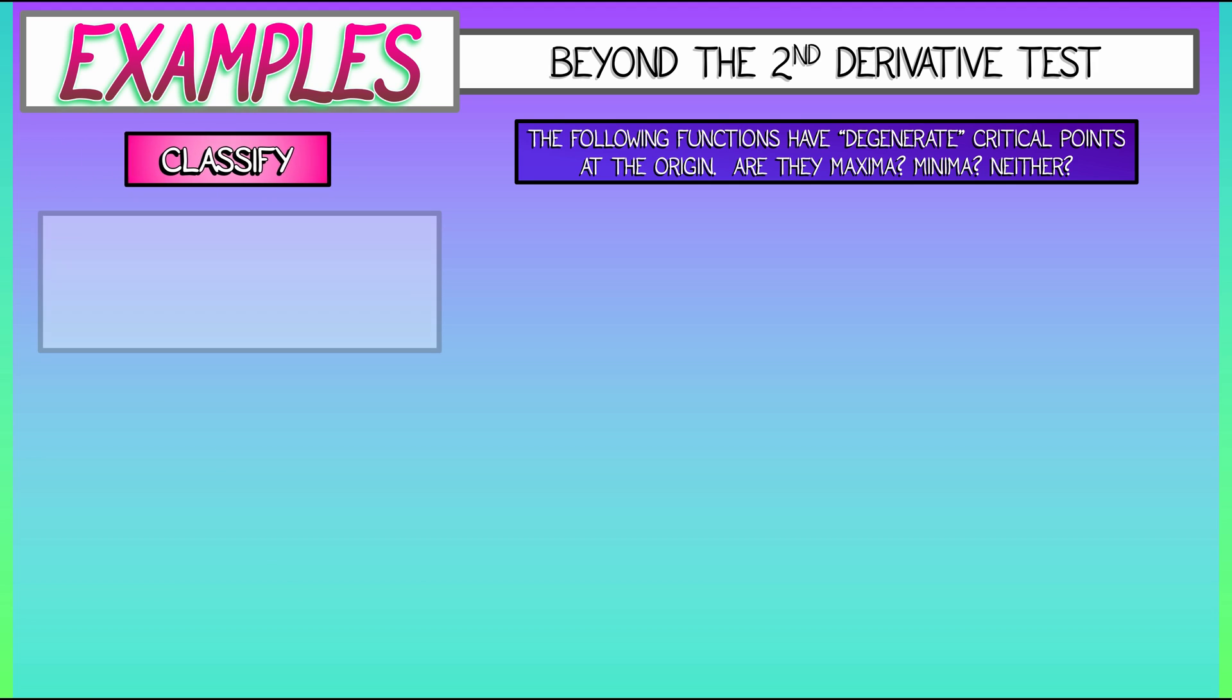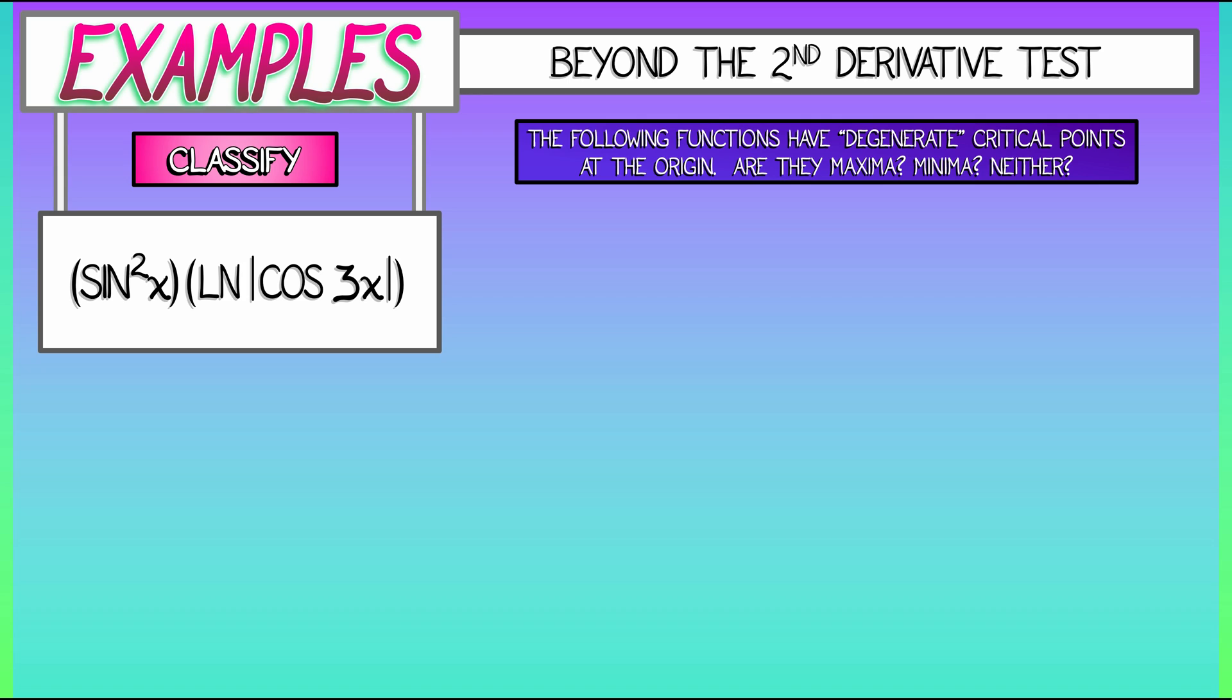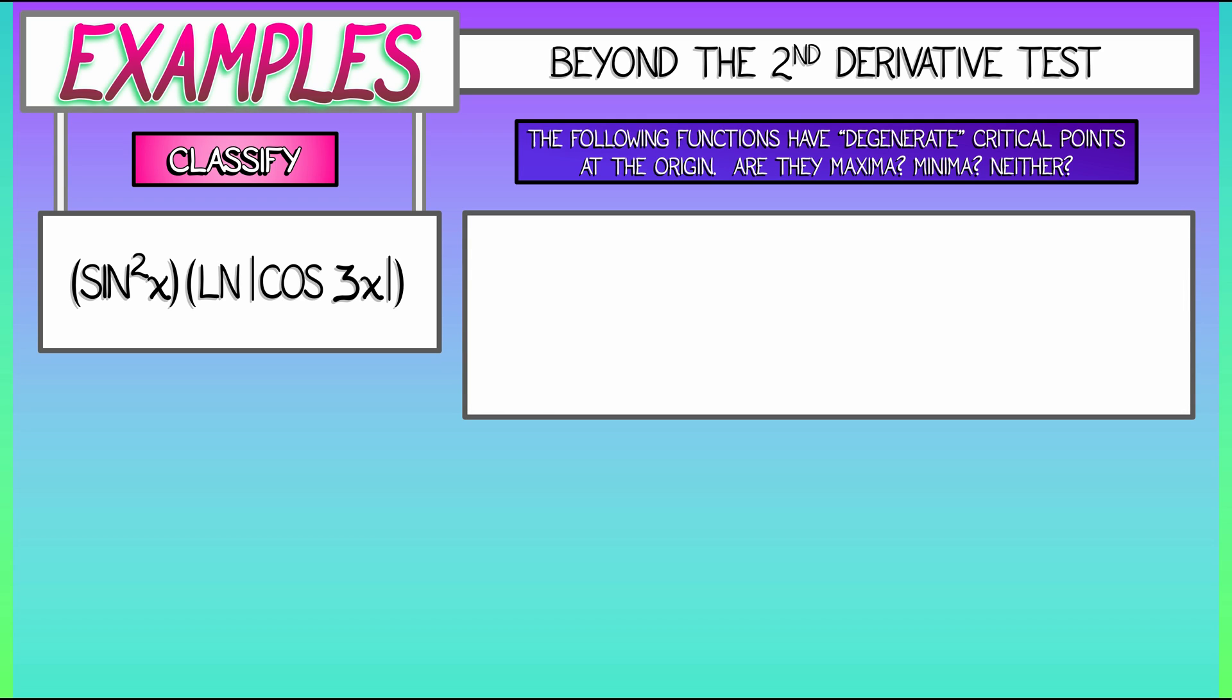First up, let's look at the function sine squared of x times log of absolute value of cosine 3x. What's that going to be? Well, let's see. We have sine squared of x. So for x close to zero, sine of x is x plus big O of x cubed.